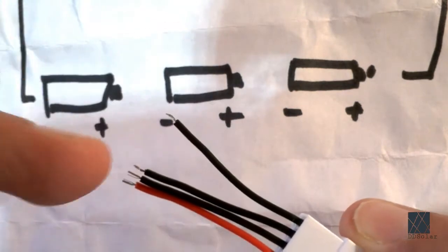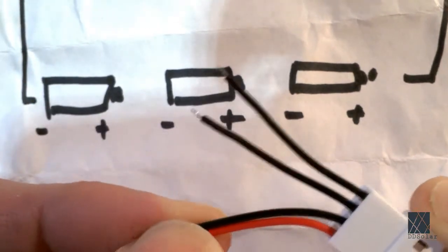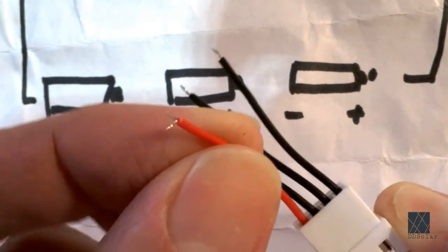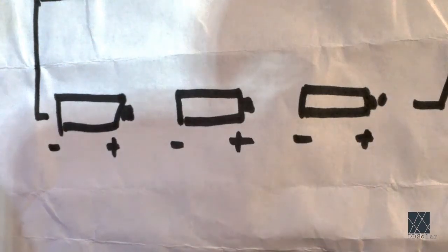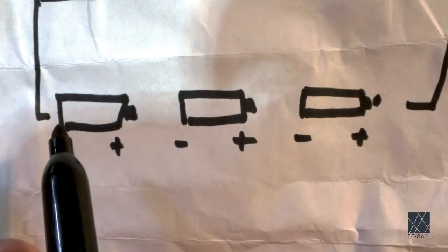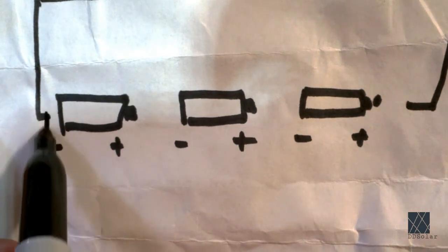So this is the most negative. This one here, next in line is the second one, third one, and finally the positive of the pack. So to connect your balance lead, you would start at the most negative end of the pack, which is right here. You attach a wire.